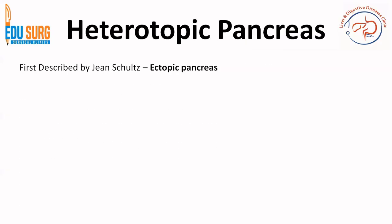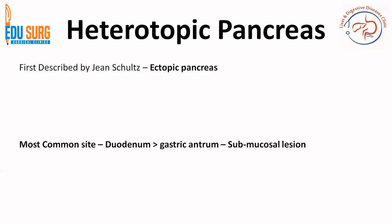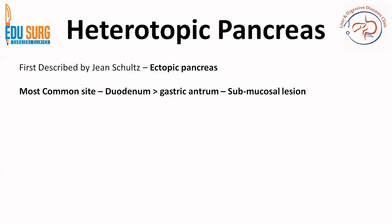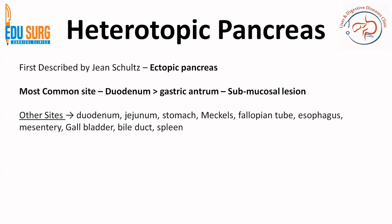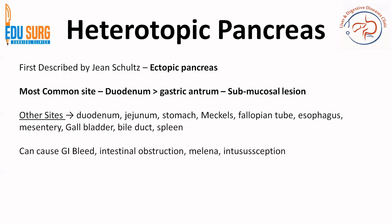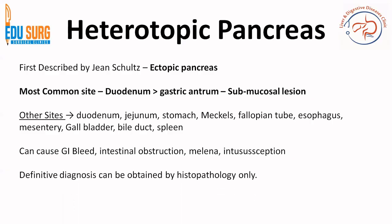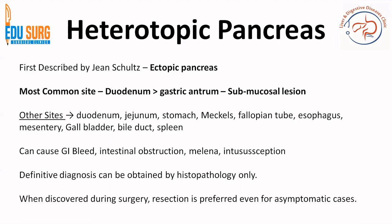Heterotopic or ectopic pancreas, as described by Jean Schultz, is pancreatic tissue with its own blood supply, separate from the main pancreas. The most common site is the duodenum, though some sources cite the gastric antrum. It is a submucosal lesion regardless of location. Other sites include the jejunum, Meckel's diverticulum, fallopian tube, esophagus, gallbladder, bile duct, spleen, and mesentery. Being active pancreatic tissue, it can cause GI bleeding, intestinal obstruction from submucosal growth, melena, and can act as a lead point for intussusception. Definitive diagnosis requires histopathology, and resection is the treatment of choice.